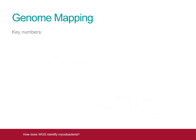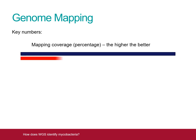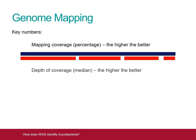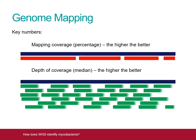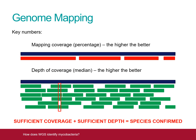In genome mapping there are two key numbers. First is mapping coverage: the amount of the reference genome that the matching words have been found for in the clinical sample. The higher the percentage of coverage, the more confident you can be that you have the right species. The second key number is depth of coverage: the average number of times that every individual base in the reference genome has appeared in the data from the clinical sample. For instance, if a base was found 10 times, this is referred to as a depth of 10. The greater the depth, the more sure you can be that you are getting the right answer. If the coverage and depth are good enough, you can confidently decide which mycobacteria is present.